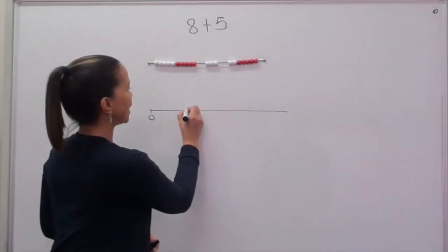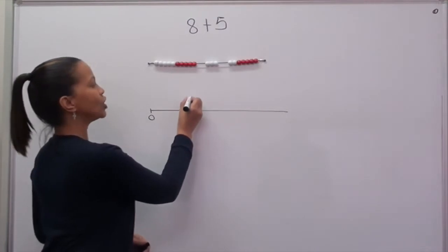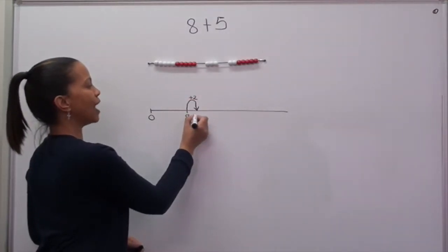To show that on the number line, I make a jump of 2 and now I have 10.